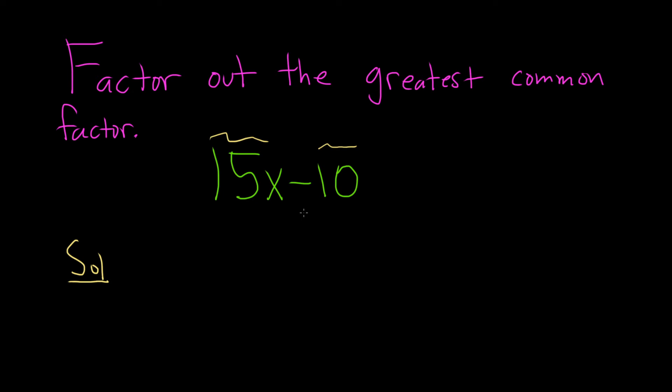You can do it in steps or you can do it all at once. I usually do it all at once. Let me show you how. You know the greatest common factor is 5, so you just put it here. That's the first step. You just write it down. Then you put a parenthesis and then you decide what goes here.